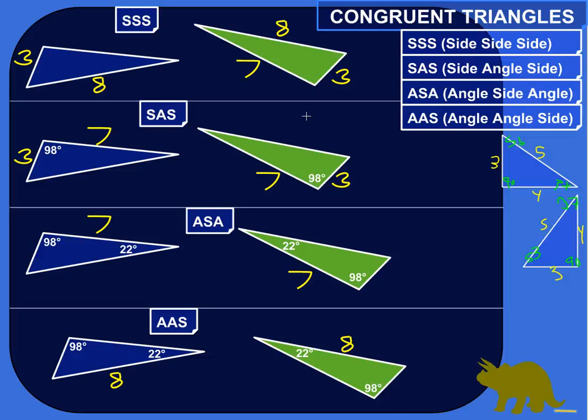Alright, so congruent triangles. Two triangles are congruent if they have congruent corresponding sides and congruent corresponding angles. So if the sides that match up have the same measure and all the angles that match up with each other have the same measure, then the two triangles are congruent.